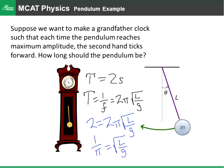We're going to square both sides, which leads us to one ninth is equal to L over 10. Because g is roughly equal to 10.